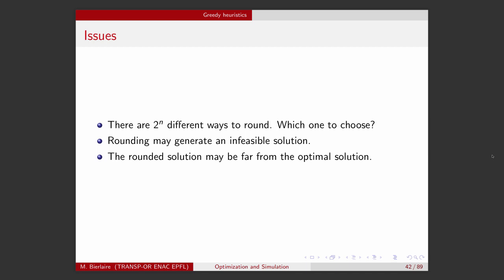So these are the issues with this idea of solving the relaxation problem and rounding the solution. First, there are many ways to round a real solution into an integer, 2 to the n actually, where n is the number of variables. So which one to choose? Also, rounding may generate an infeasible solution and we have seen an example where all the 2 to the n possibilities were infeasible. None of them was feasible. And finally, in the example, we have seen that the rounded solution may be actually quite far from the optimal solution of the problem. So therefore, it may not even give a hint of the area where the optimal solution is.